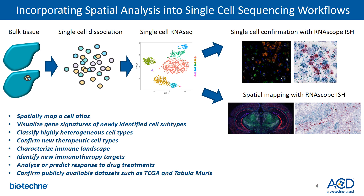Many researchers have used this in order to spatially map a cell atlas, visualize gene signatures of newly identified cell subtypes, classify highly heterogeneous cell types, and even confirm new therapeutic cell types. You can also characterize the immune landscape, identify new immunotherapy targets, analyze or predict response to drug treatments, and confirm publicly available datasets such as the TCGA and Tabula Muris.